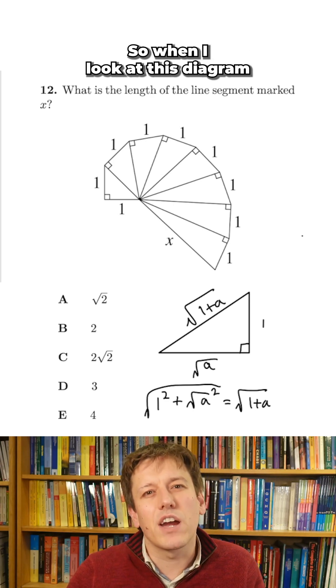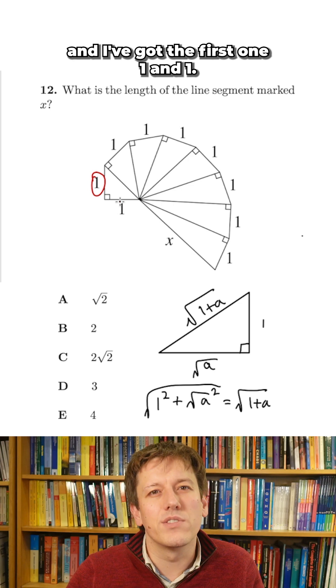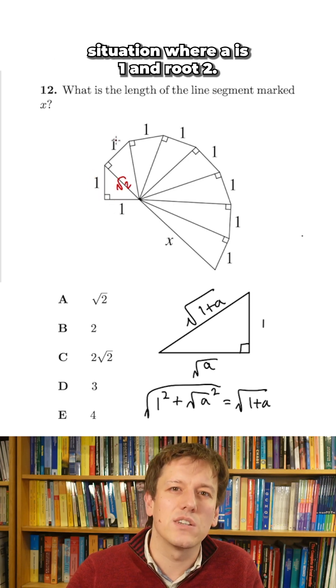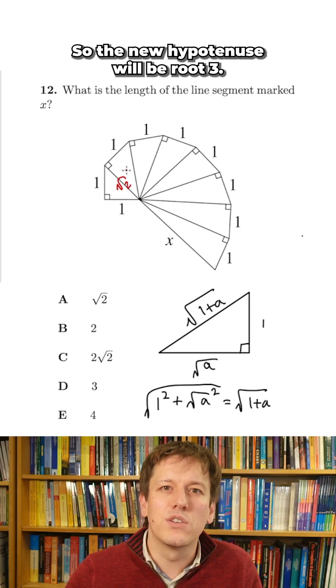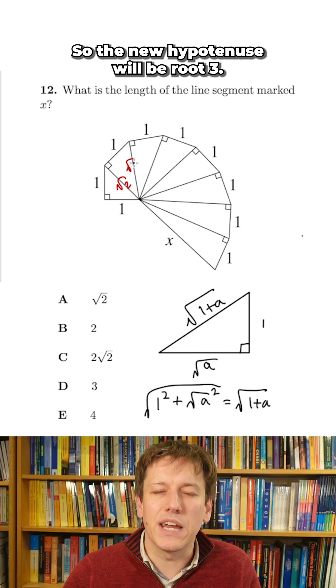So when I look at this diagram, I've got the first one, 1 and 1, so the hypotenuse is root 2. And now I've got this situation where it's 1 and root 2, so the new hypotenuse will be root 3.